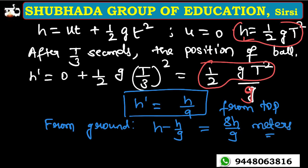So 8h divided by 9 is the right answer for this problem — the position from the ground. It is option C and it is the right answer. It is easy to solve. Hope it is clear to everyone.